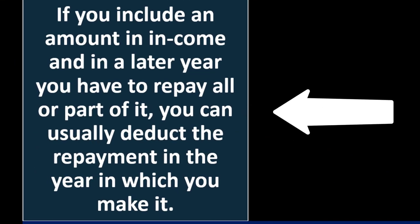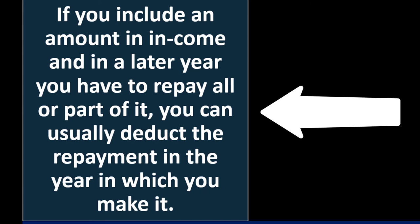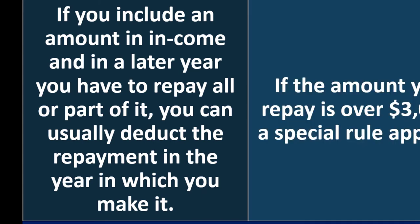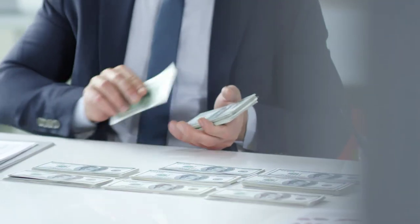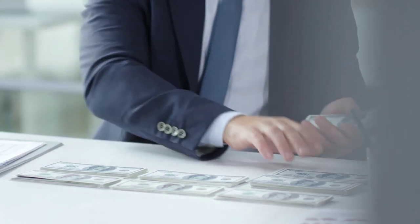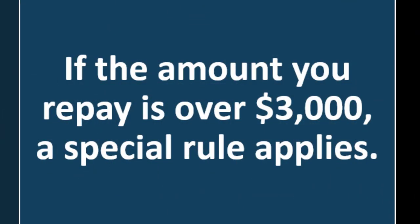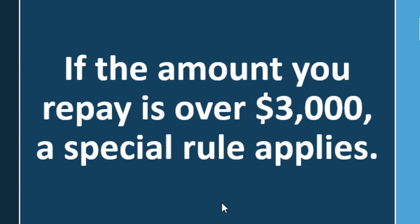Payment of income: if you include an amount in income and in a later year you have to repay all or part of it, you can usually deduct the repayment in the year in which you make it. If the amount you repay is over $3,000, a special rule applies. Rather than amending the prior year return to remove the income, you generally take it as a deduction in the current year — though it can get messy if you're in completely different tax brackets from one year to the next. For details on the special rule, see repayment in chapter 11 of Publication 535.